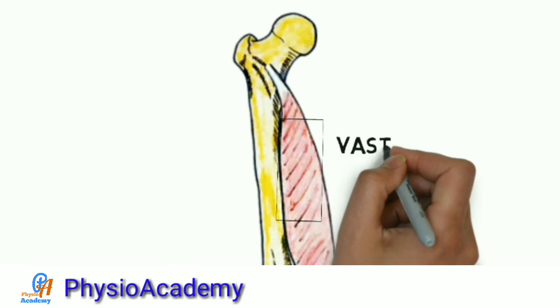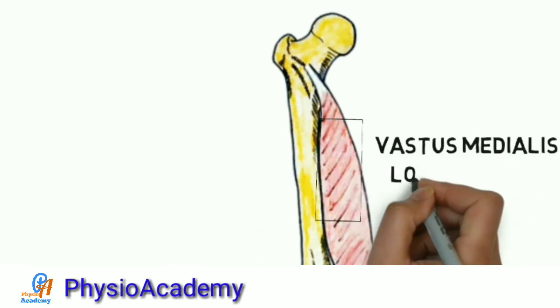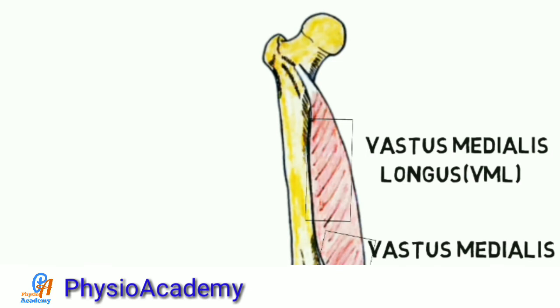So it is called vastus medialis longus (VML), and the direction of the lower fibers is horizontal or oblique, so it's called vastus medialis oblique (VMO). This part of the muscle is called VMO.